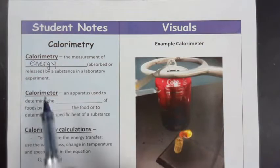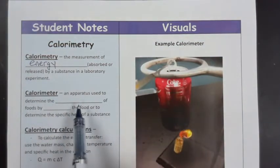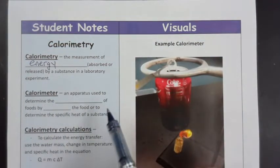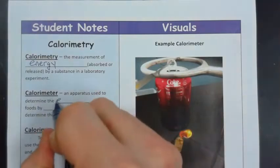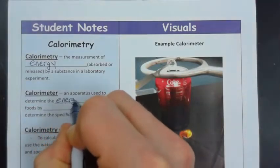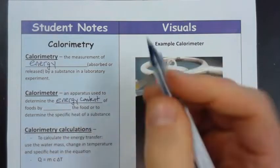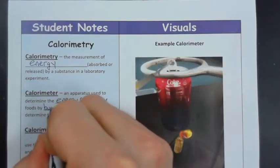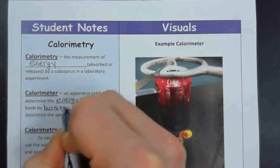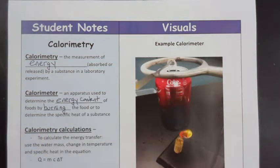A calorimeter is an apparatus or device used to determine the energy content of foods by burning the food, or to determine the specific heat of an unknown substance.